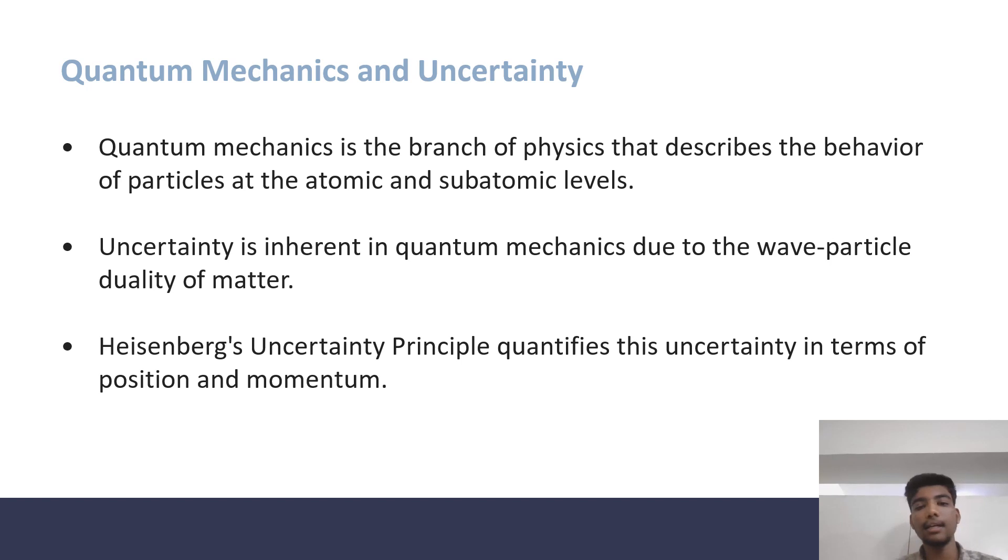Uncertainty is inherent in quantum mechanics due to the wave-particle duality of matter. Heisenberg's Uncertainty Principle quantifies this uncertainty in terms of position and momentum.